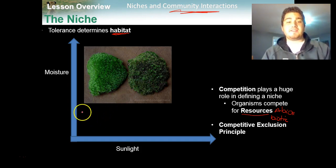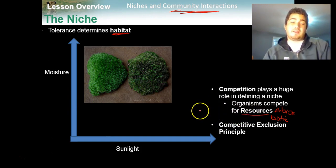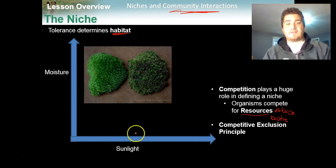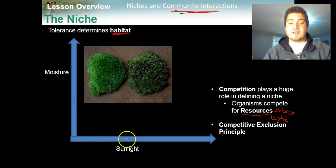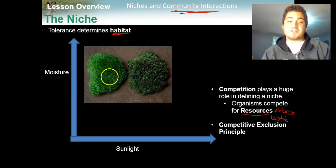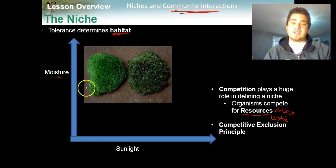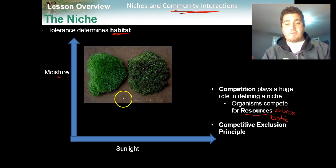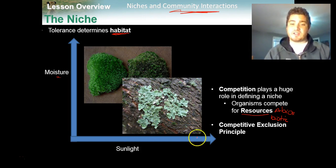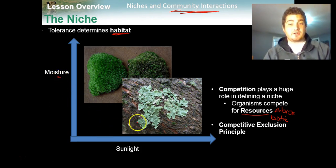Let's take moss and lichen as an example. Both grow on trees, and two key resources determining their growth are moisture and sunlight. On our graph, the x-axis shows increasing sunlight and the y-axis shows increasing moisture. Moss is found where there's less sunlight but more moisture — that area represents the niche for moss. Lichen can handle more sunlight but also needs moisture since both organisms do photosynthesis.